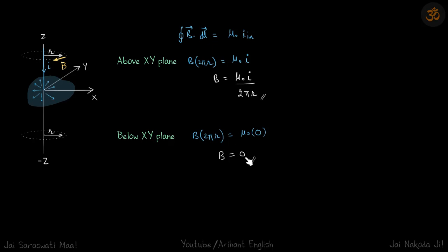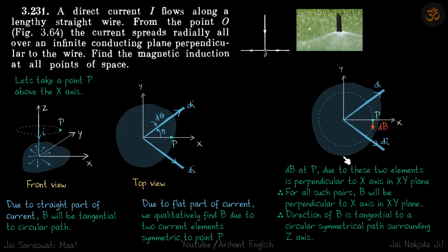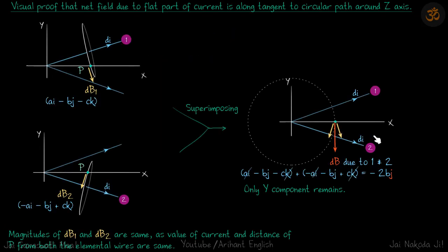Now let us see that proof where we can see that due to the flat part of the current, the field is in this direction. We have broken these into two current elements. First, take this current element. Take a circle. The field due to this current element alone will be along the tangent of the circle.